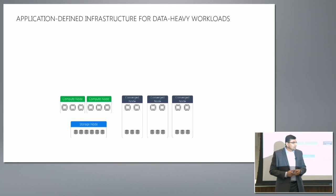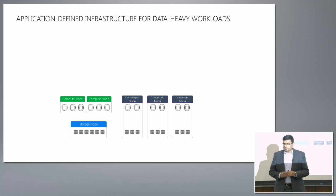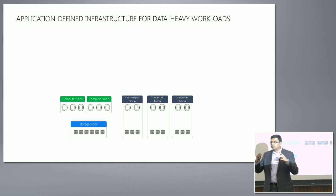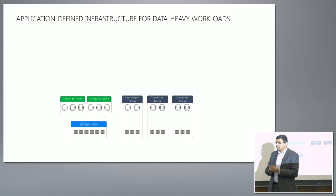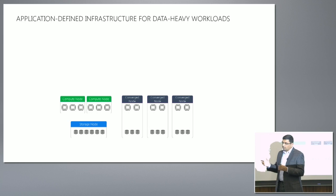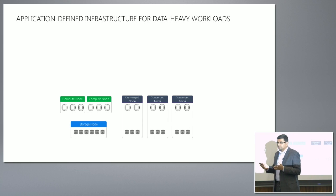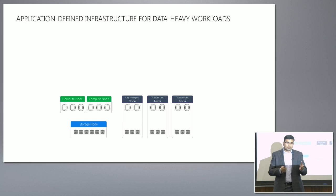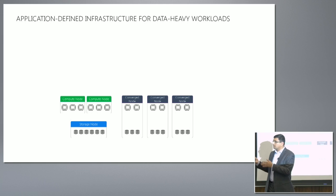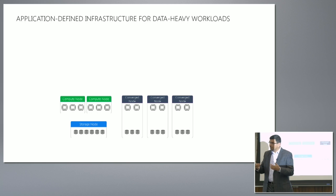So Primal talked about application-defined data center. I'm going to talk about how you build that and what it actually means to be application-aware at the infrastructure layer. Let's start with a deployment of Robin software. We are a pure software play. Customers basically deploy our software on commodity hardware — the hardware you would normally use to deploy big data infrastructure like Hadoop or Cassandra, which is boxes with RAM, CPU, and direct attached storage.